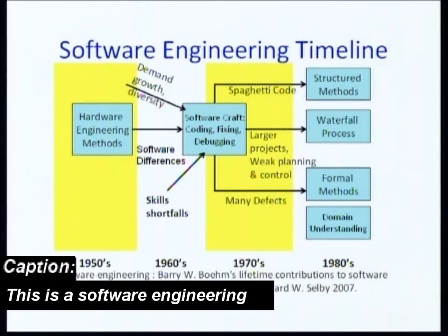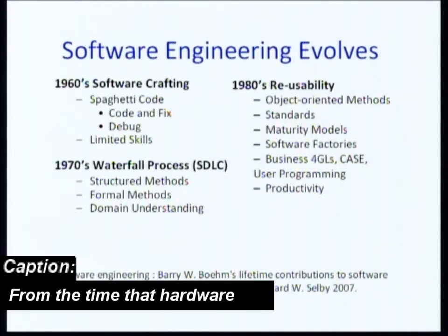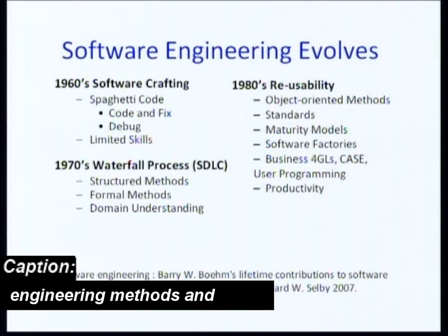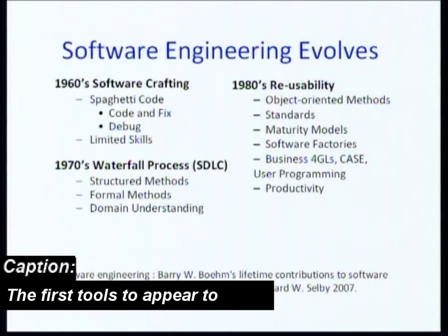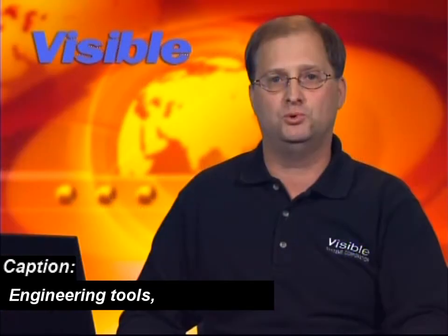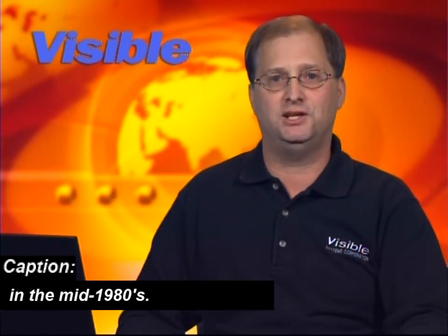This is a software engineering timeline. From the time that hardware engineering methods were put in place, there was a 25-year span of time before software engineering methods and techniques took root. The first tools to appear to address software engineering were computer-aided software engineering tools in the mid-1980s.